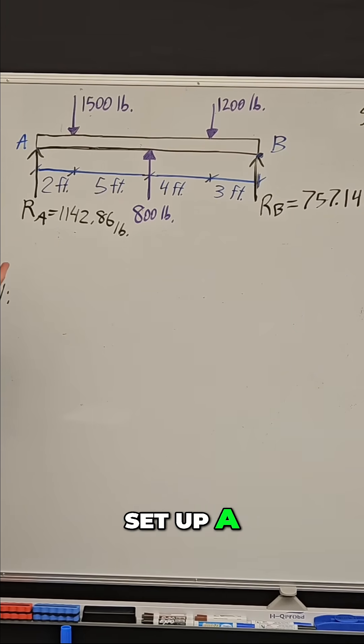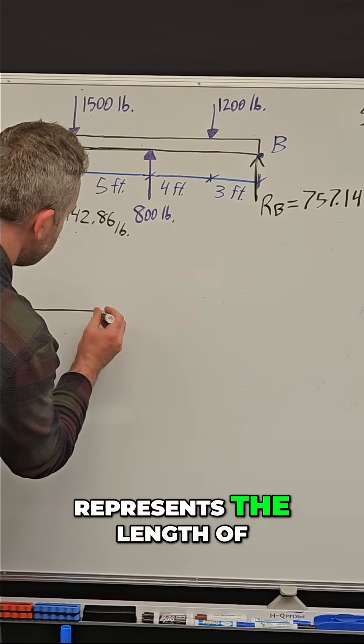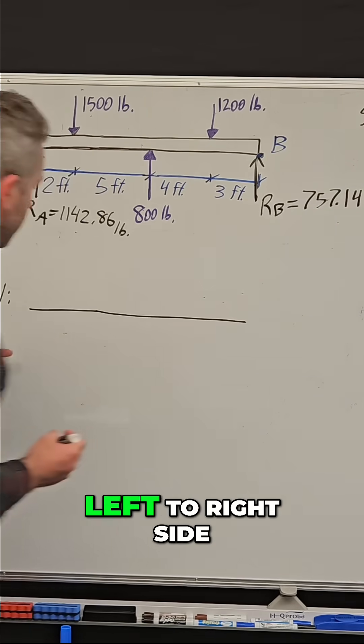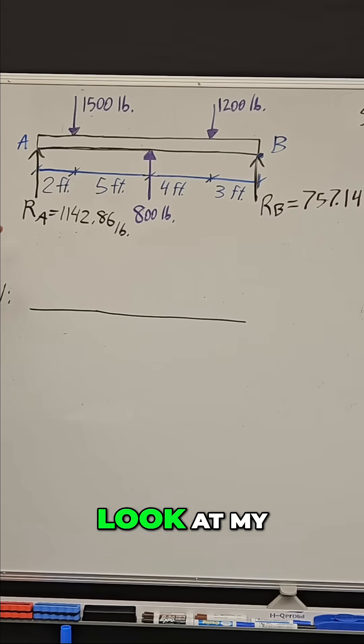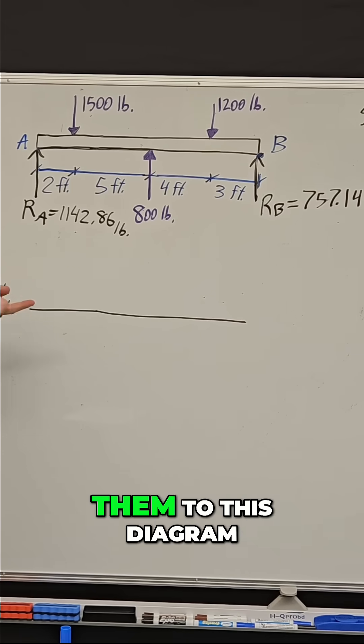To set up a shear diagram or a V diagram, I create a line that represents the length of this beam from left to right side. I look at my up and down forces as I go through and add them to this diagram.